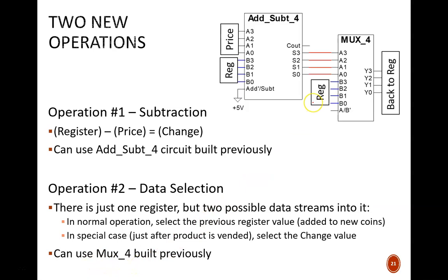This schematic shows the two new devices labeled with their appropriate inputs. The add subtract 4 device is always in subtract mode thanks to this plus 5-volt signal here. Since we designed it to perform B minus A, the register value should pass into the B ports and the price value to the A ports.